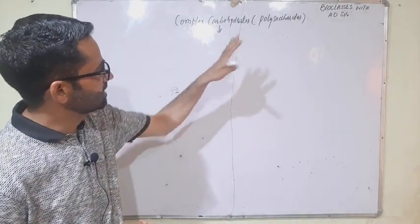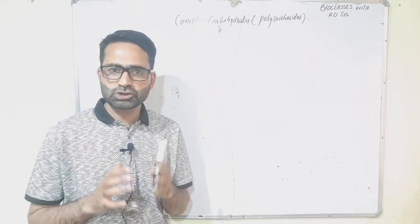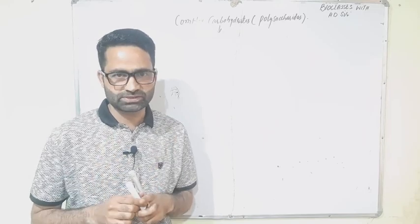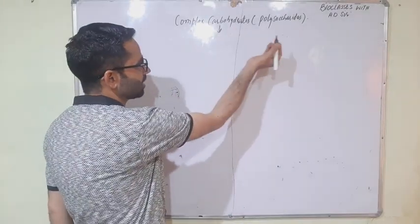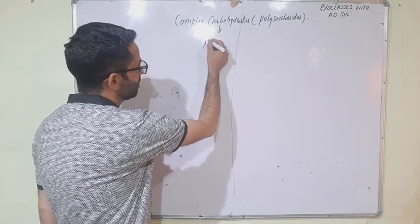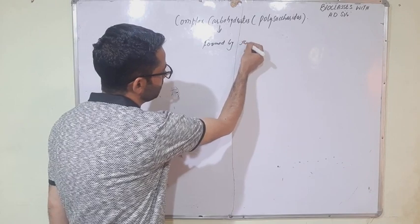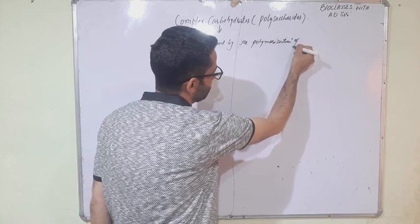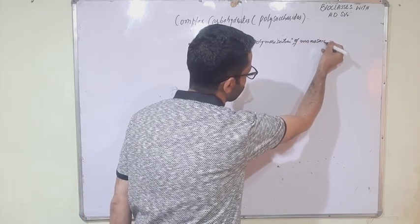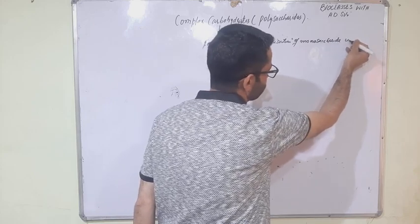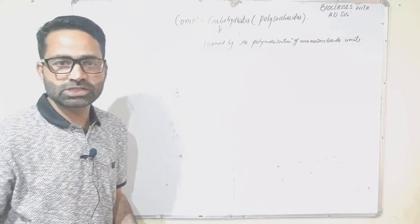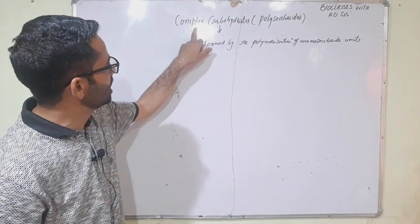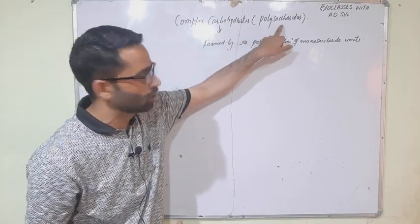Complex Carbohydrates and Polysaccharides are carbohydrates which are formed by means of the polymerization or condensation of the monosaccharide units. So we can say that the Complex Carbohydrates or Polysaccharides are formed by the polymerization of monosaccharide units, which when joined together form complex carbohydrates and polysaccharides.